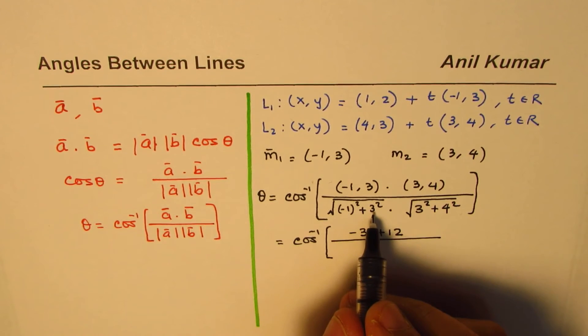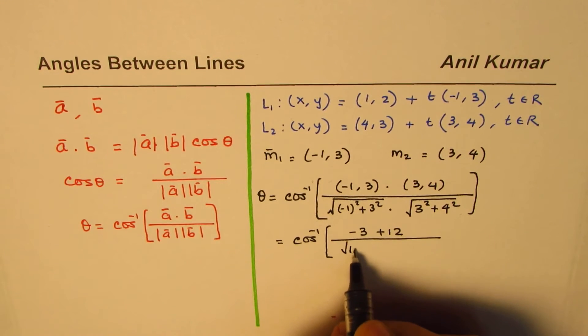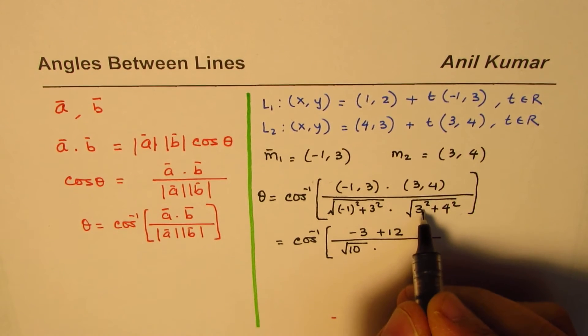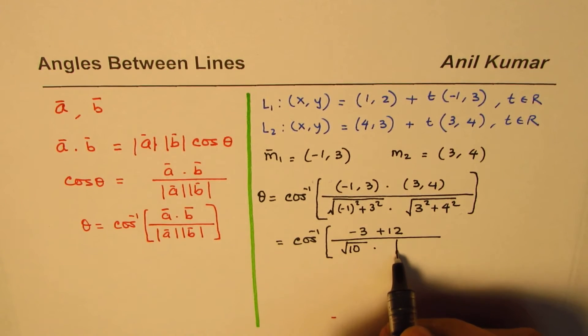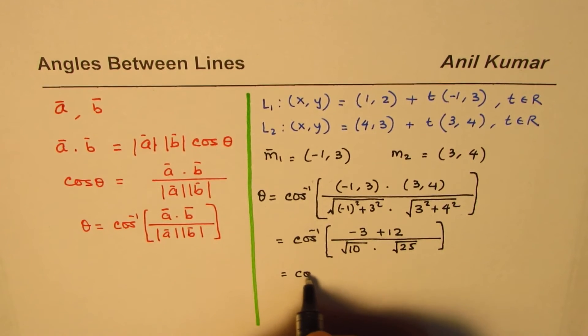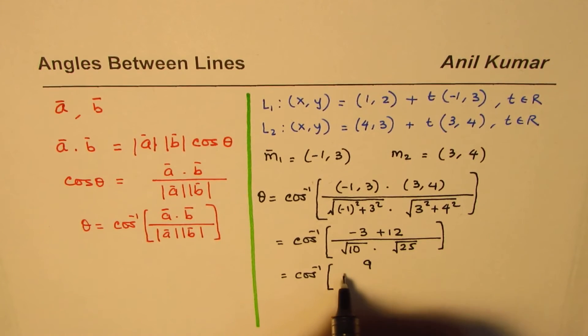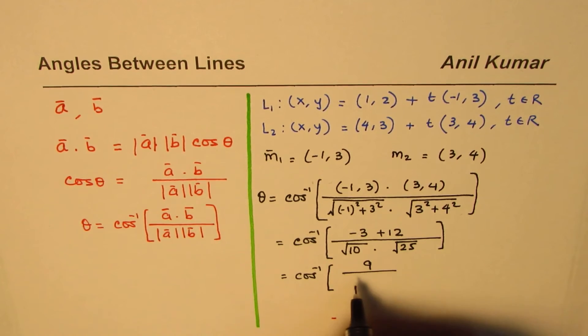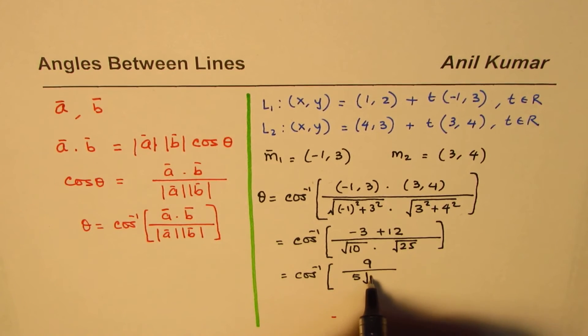The denominator is 1 + 9, which is square root of 10, times 9 + 16, which is square root of 25. So that is cos inverse of 12 - 3, which is 9, divided by 5√10.